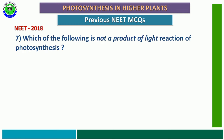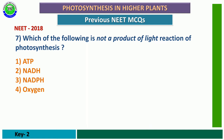Question number 7 from NEET 2018: Which of the following is not a product of the light reaction of photosynthesis? Options: ATP, NADH, NADPH, oxygen. The correct answer is NADH — the second option. NADPH, ATP, and oxygen are the end products of the light reaction, but NADH is not formed in photosynthesis; it is seen in the respiratory process.